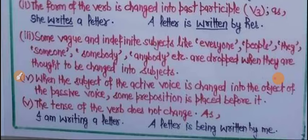Rule number 5: The tense of the verb does not change. Passive voice میں tense نہیں بدلے گا۔ مثال: I am writing a letter — یہ present continuous ہے — passive voice میں بھی present continuous ہوگا: A letter is being written by me. 'Is being' یہاں present continuous ظاہر کرتا ہے۔